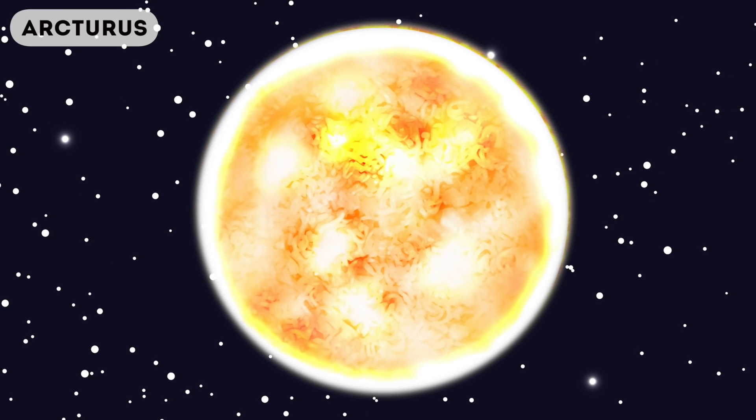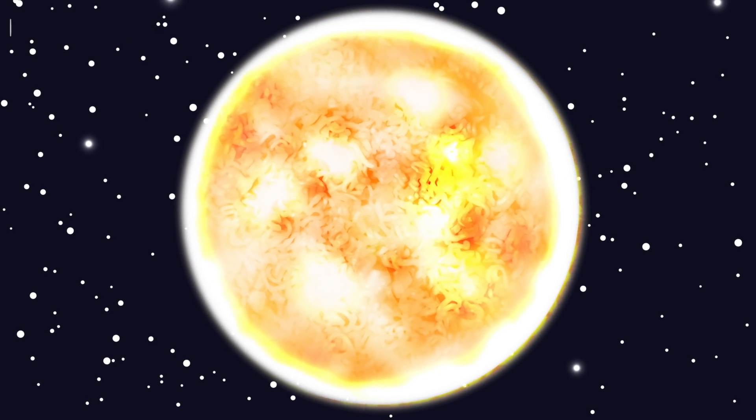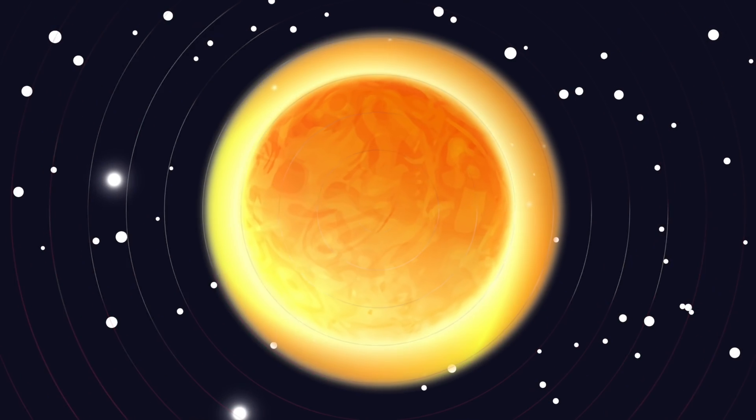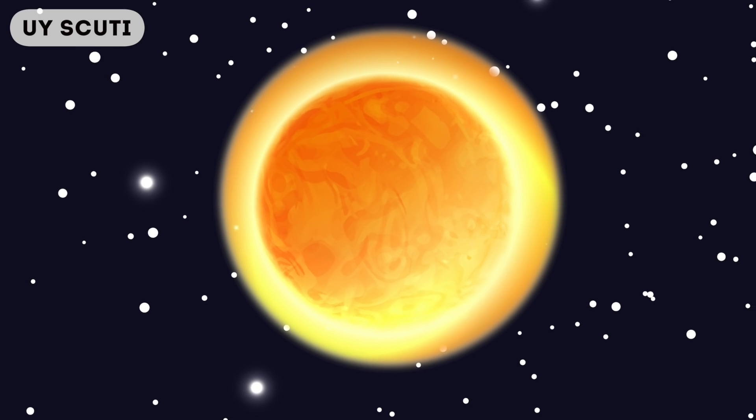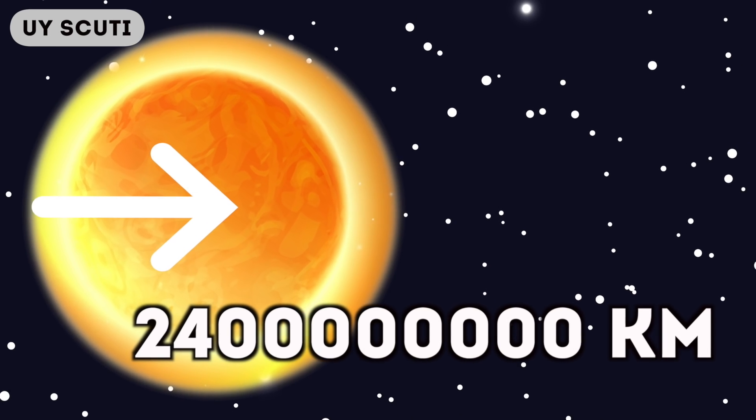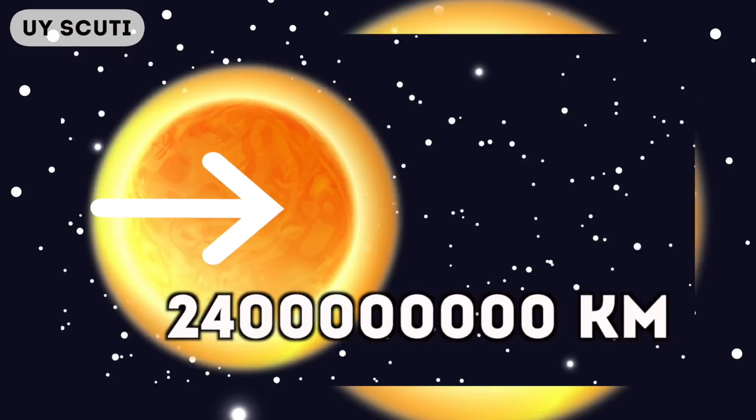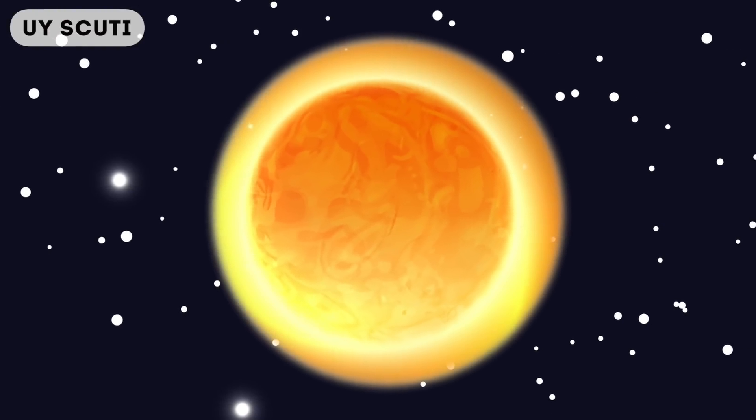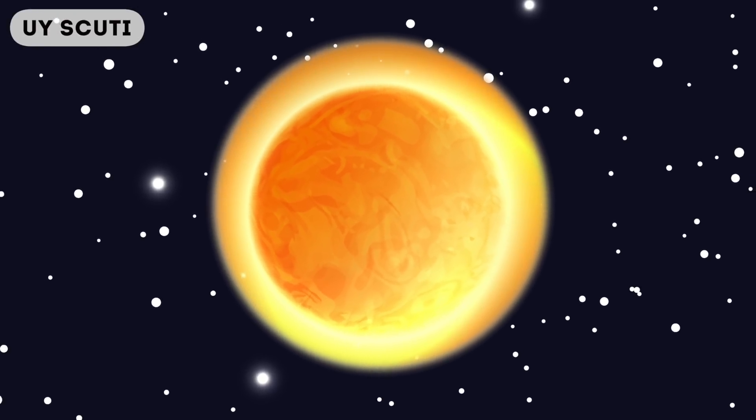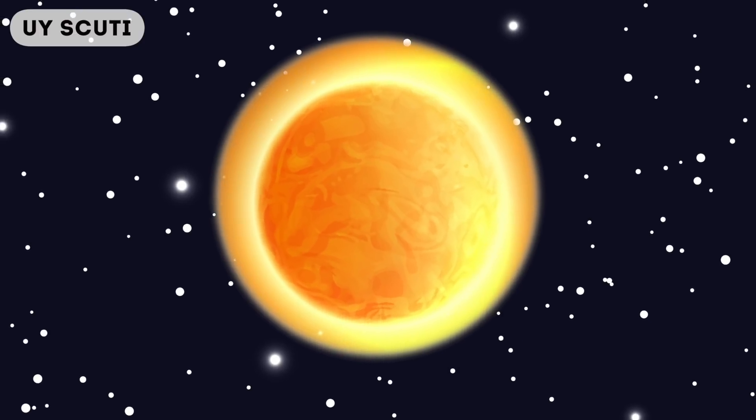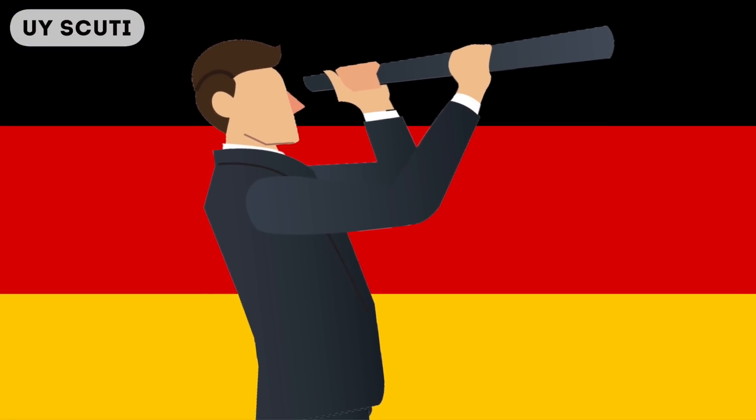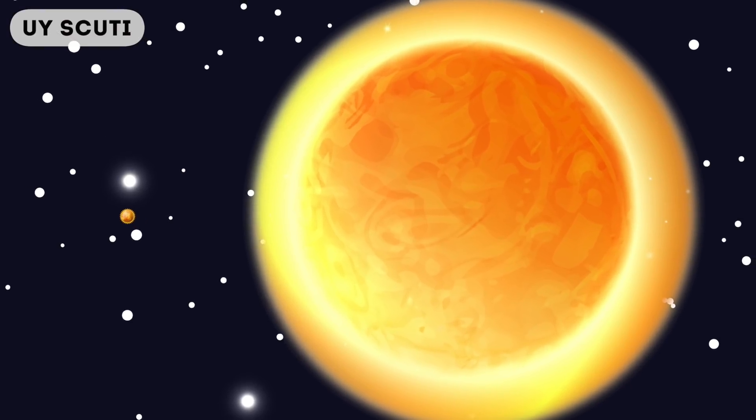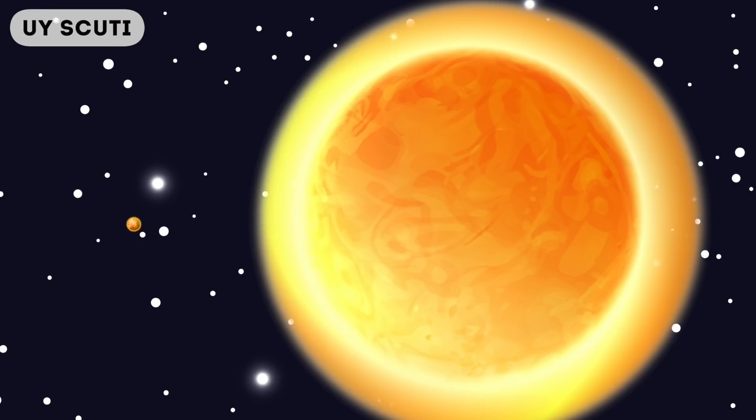Now let's look at UY Scuti. This planet definitely has a cool name, but it's also ridiculously big. This planet has a diameter of 2.4 billion kilometers. If you thought Arcturus was big, then check out the comparison. Some say this is actually the largest star in the universe, but believe it or not, there are even bigger stars than this out there. Amazingly, it was discovered all the way back in 1860 by a German astronomer. And compared to UY Scuti, the Sun is microscopic. But do you want to see a planet that makes UY Scuti microscopic?